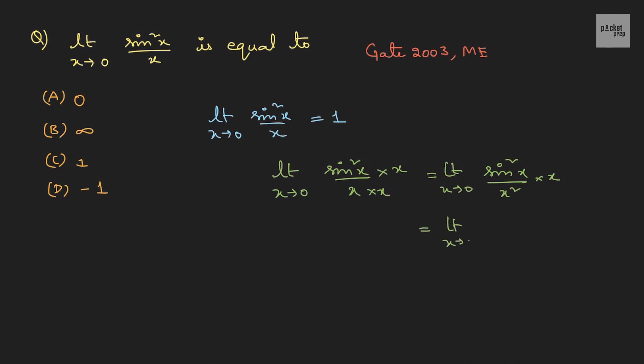This is limit x tends to 0, sin x by x whole square into limit x tends to 0 x. In this, this value is 1. So, I can write it as 1 square into limit x tends to 0 x is actually 0 because x is a linear function. When you substitute the value 0, this whole thing will become 0. So, anything multiplied by 0 is 0. Therefore, it is actually not 1. So, please be careful while solving these type of questions.